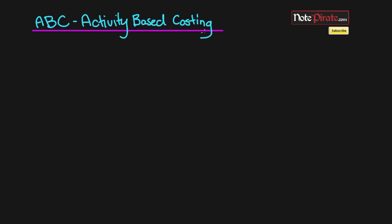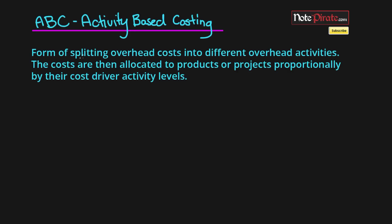We're going to be covering Activity Based Costing systems in this tutorial, otherwise known as ABC systems. If you're not sure what ABC systems are, it's a form of splitting overhead costs into different overhead activities. The costs are then allocated to products or projects proportionately by their cost driver activity levels.